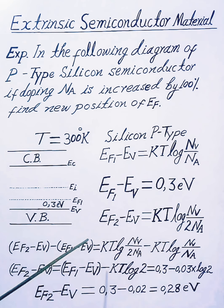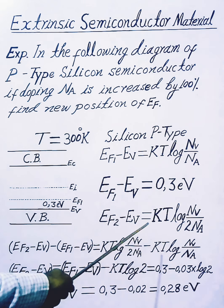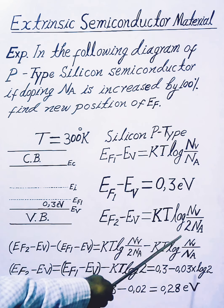If we increase the doping by 100%, making it double, then the new Fermi level position EF2 minus EV equals KT log Nv divided by 2Na.